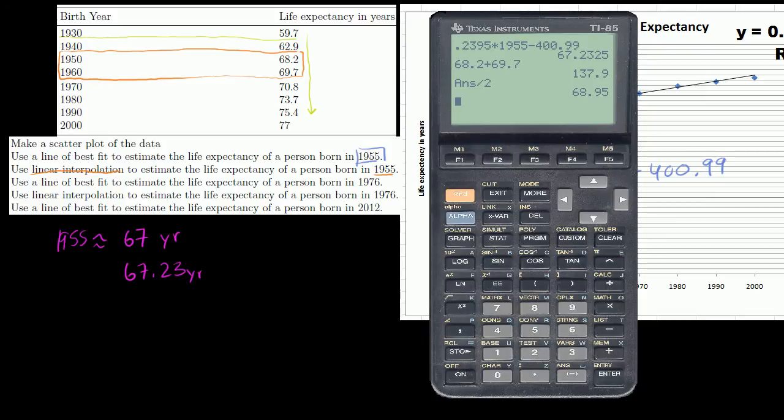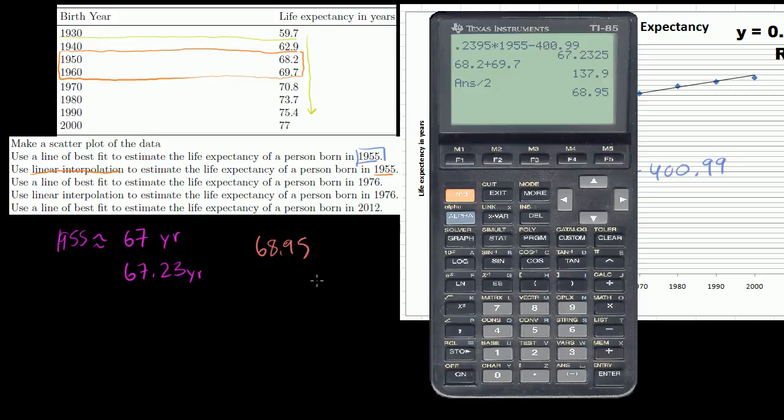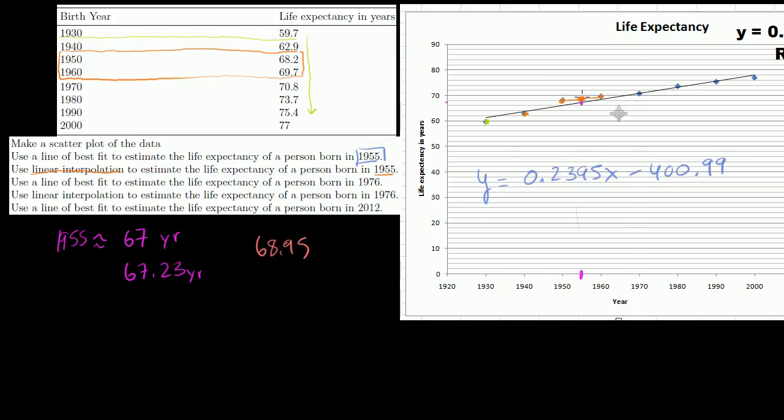So part two, through linear interpolation, we get 68.95. So that is this point right here. So linear interpolation is giving us a slightly higher estimate than our line of best fit across all of the data. And you can even eyeball it if you look at it right there.